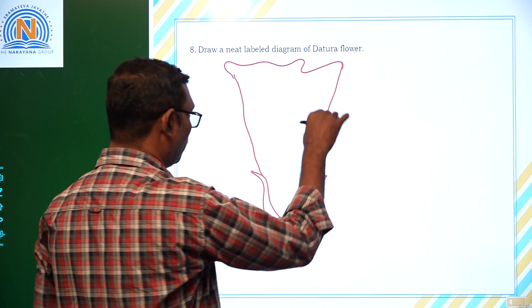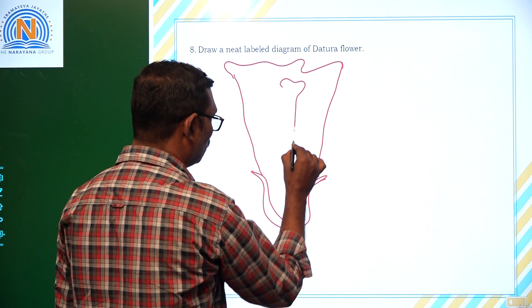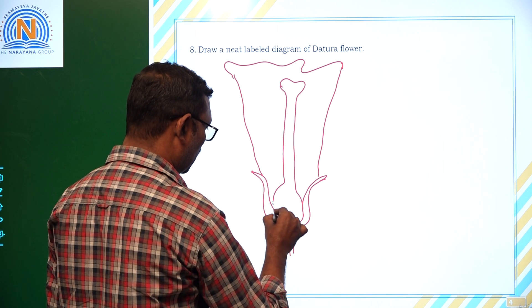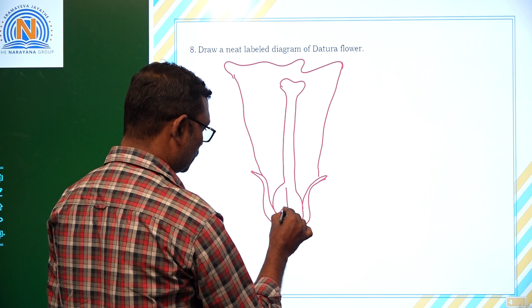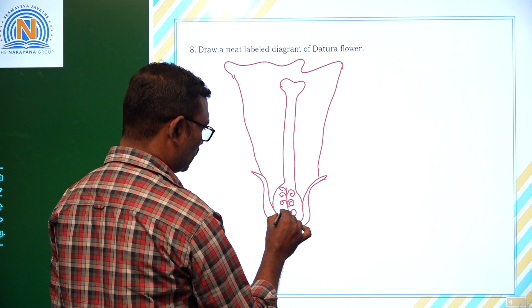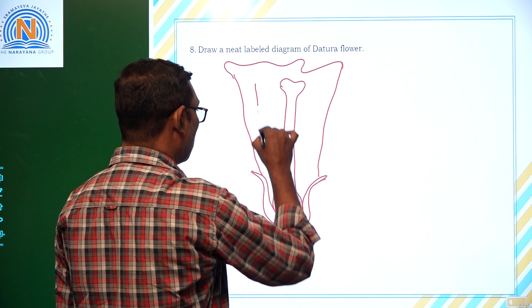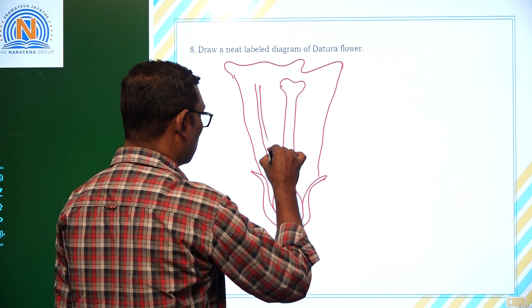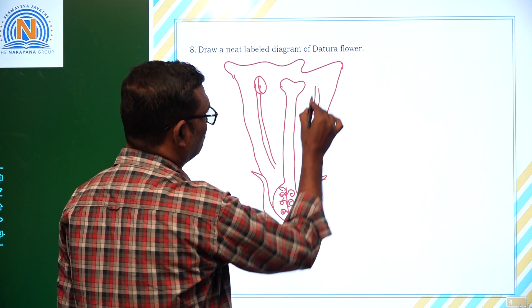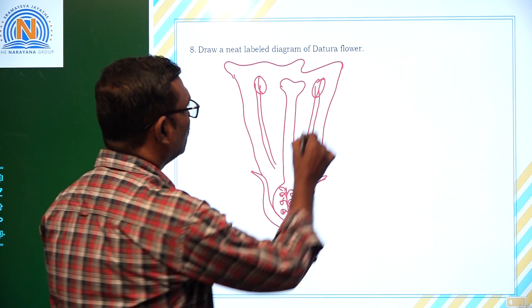This one is what we call petals. And here first I am going to draw here female reproductive part that is called pistil or gynoecium. So here see, what are those? Here are some ovules. Ovules are present inside the ovary. And also there are male reproductive parts called stamens or otherwise called androecium.